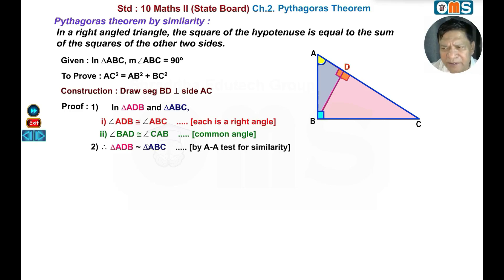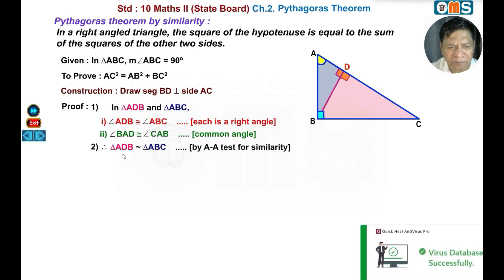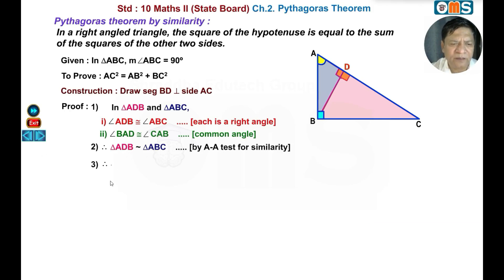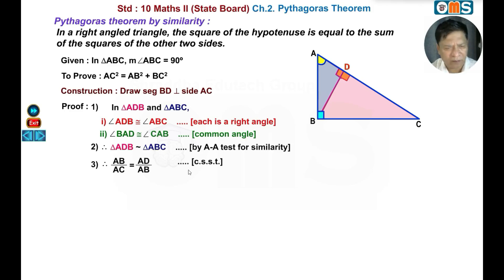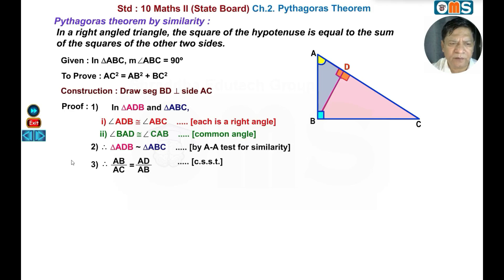If triangles are similar, their sides are proportional. Therefore, AB upon AC is equal to AD upon AB — corresponding sides of similar triangles. Taking cross multiplication: AB square is equal to AC into AD. This is equation 3.